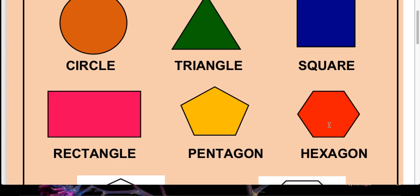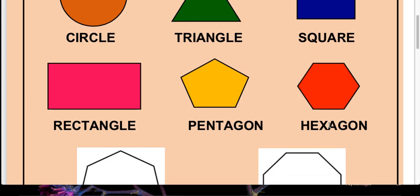Next one is hexagon. Hexagon kya hai? Hexagon is the closed shape which is having one, two, three, four, five, six sides. So the shape which is having six sides is known as hexagon. Hexagon woh closed shape hai jiske six ya chhe sides hote hai.